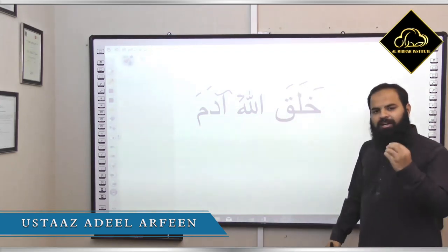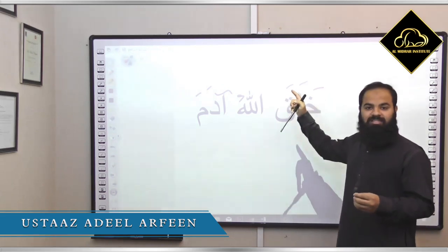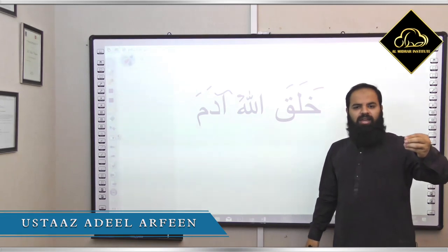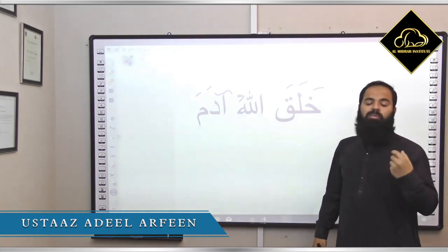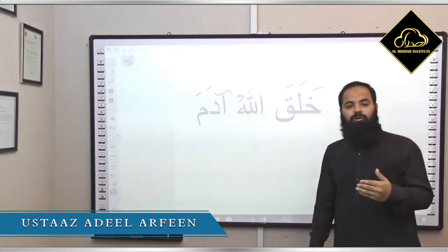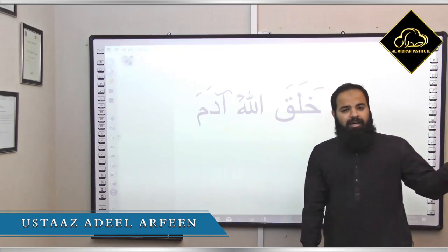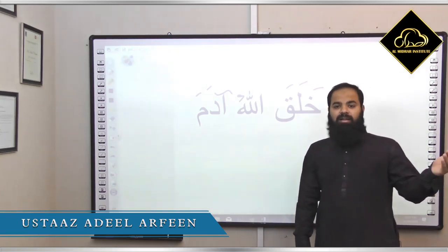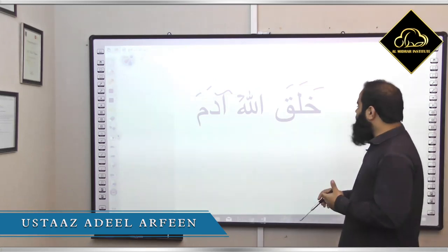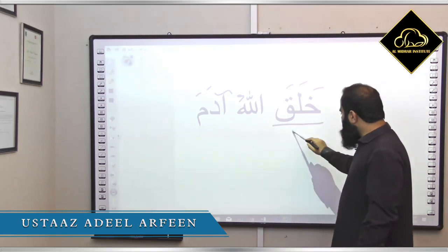Now if you see a word in Quran with three zabar consecutively, that would be a past tense — that would be a verb. For example: خلق (he created), کتب (he wrote), جلس (he sat), ذہب (he went), کسر (he broke). So Allah says خلق اللہ — this becomes your past tense verb.